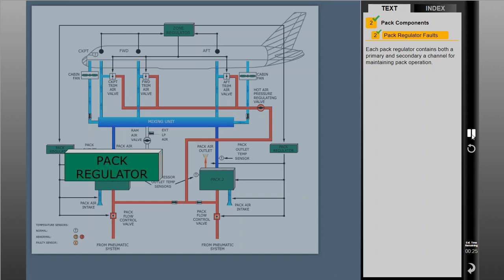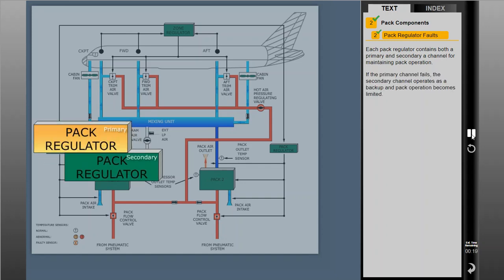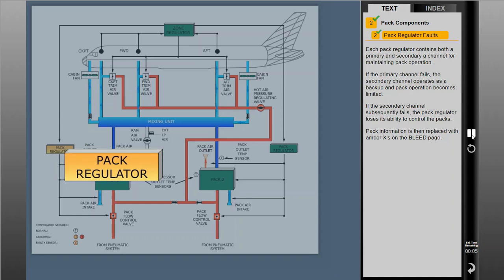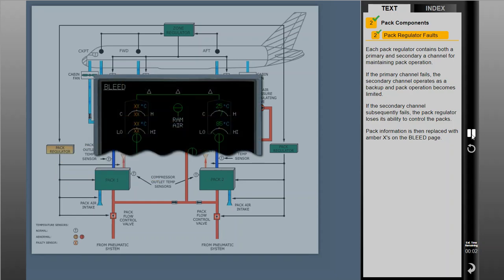Each PAC regulator contains both a primary and secondary channel for maintaining PAC operation. If the primary channel fails, the secondary channel operates as a backup and PAC operation becomes limited. If the secondary channel subsequently fails, the PAC regulator loses its ability to control the PACs. PAC information is then replaced with amber Xs on the bleed page.